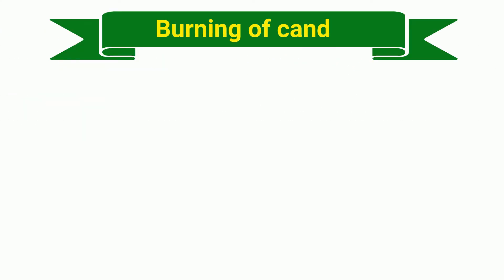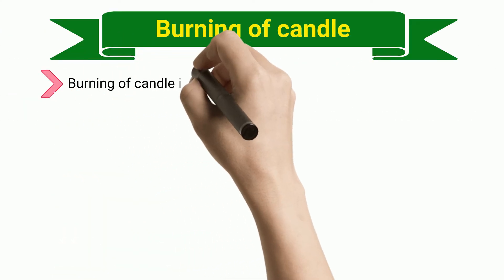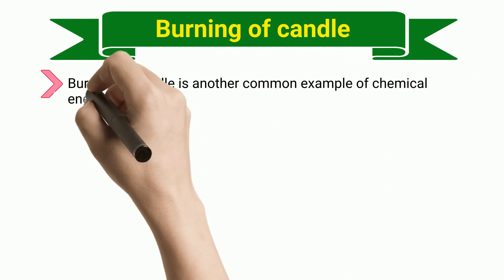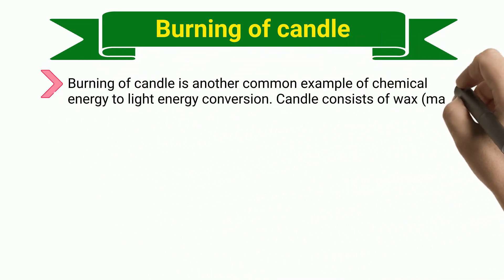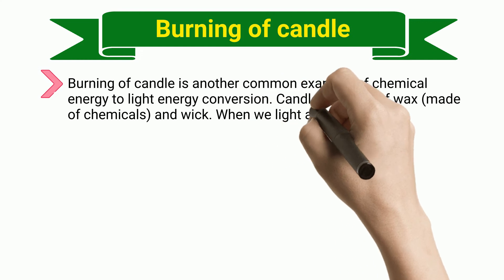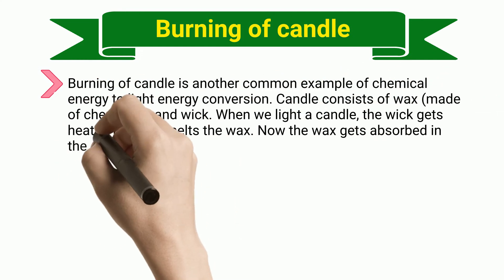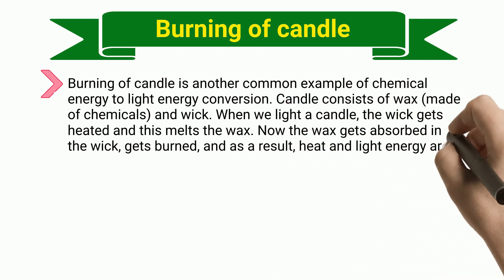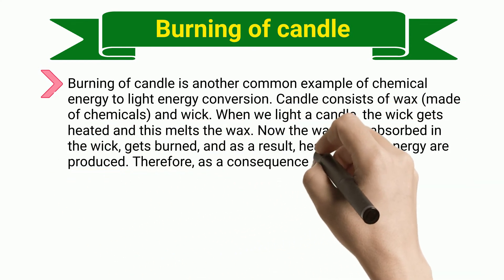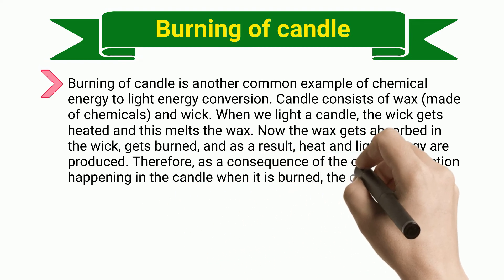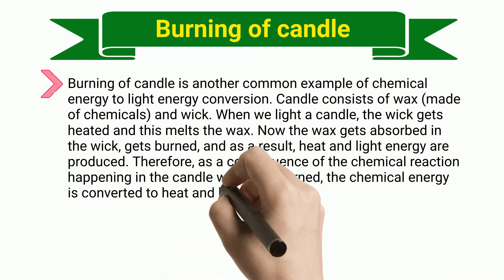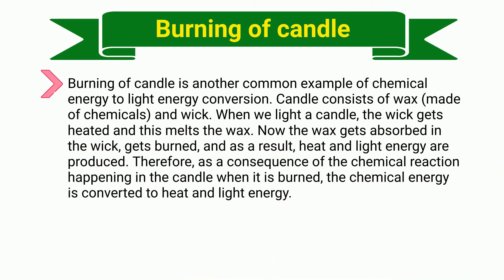Burning of Candle. Burning of a candle is another common example of chemical energy to light energy conversion. A candle consists of wax, made of chemicals, and a wick. When we light a candle, the wick gets heated and this melts the wax. The wax then gets absorbed in the wick, gets burned, and as a result, heat and light energy are produced. Therefore, as a consequence of the chemical reaction happening in the candle when it is burned, the chemical energy is converted to heat and light energy.